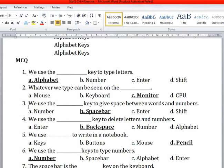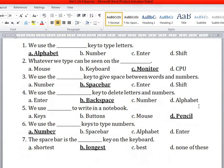Next, we use the blank key to give space between words and numbers. Options are Number, Spacebar, Enter, Shift. What is the right answer? Yes, Spacebar. We use the Spacebar key to give space between words and numbers.